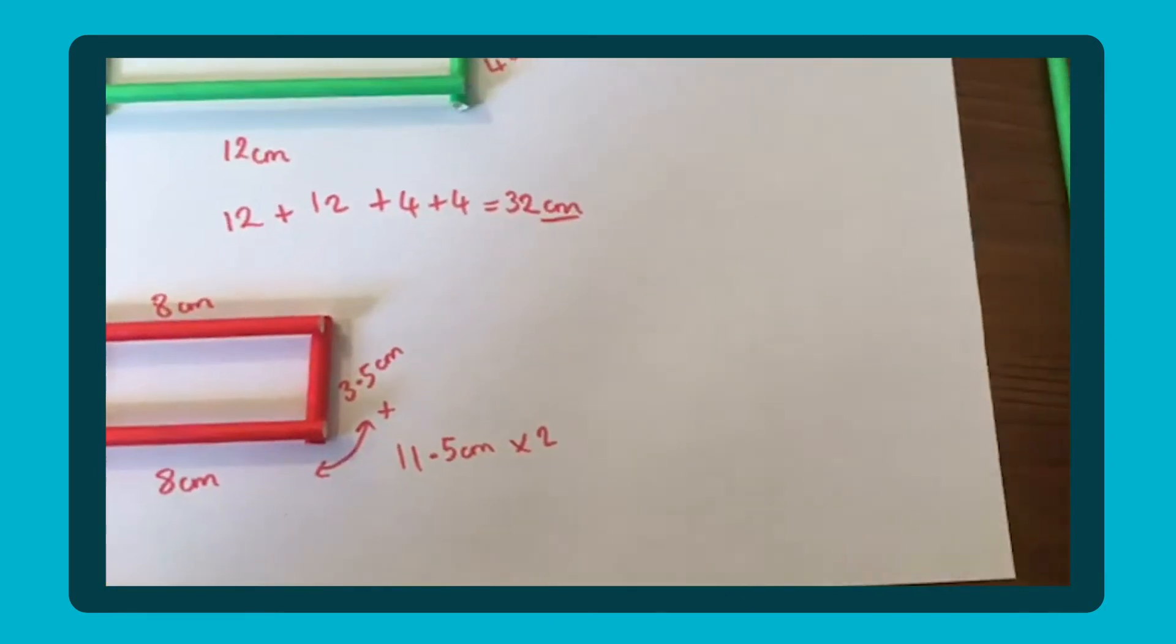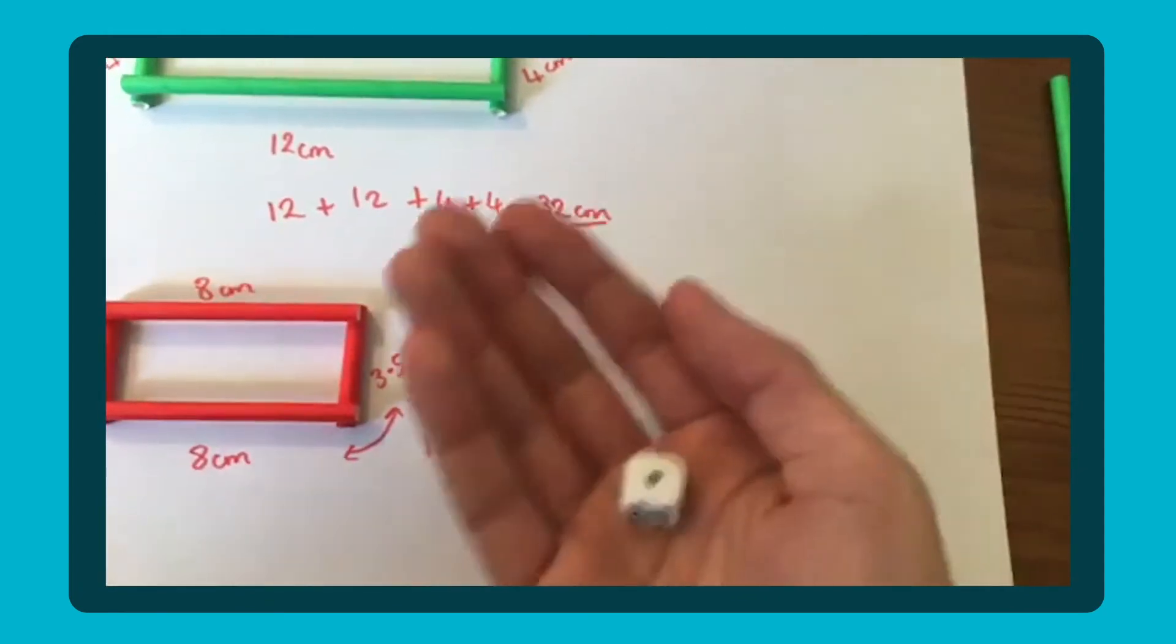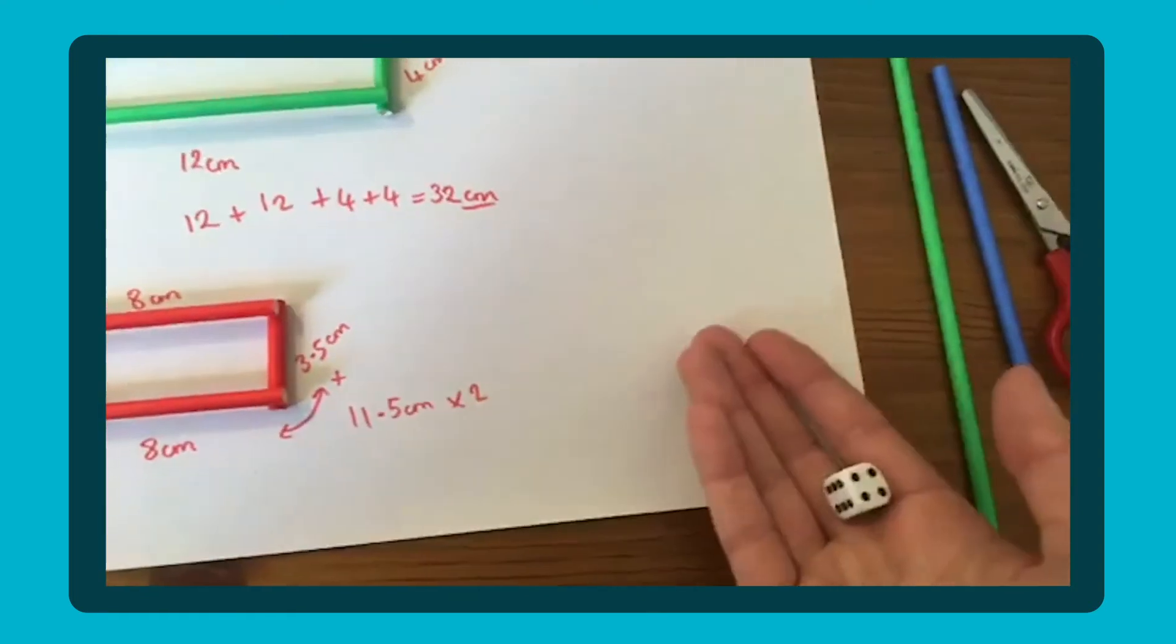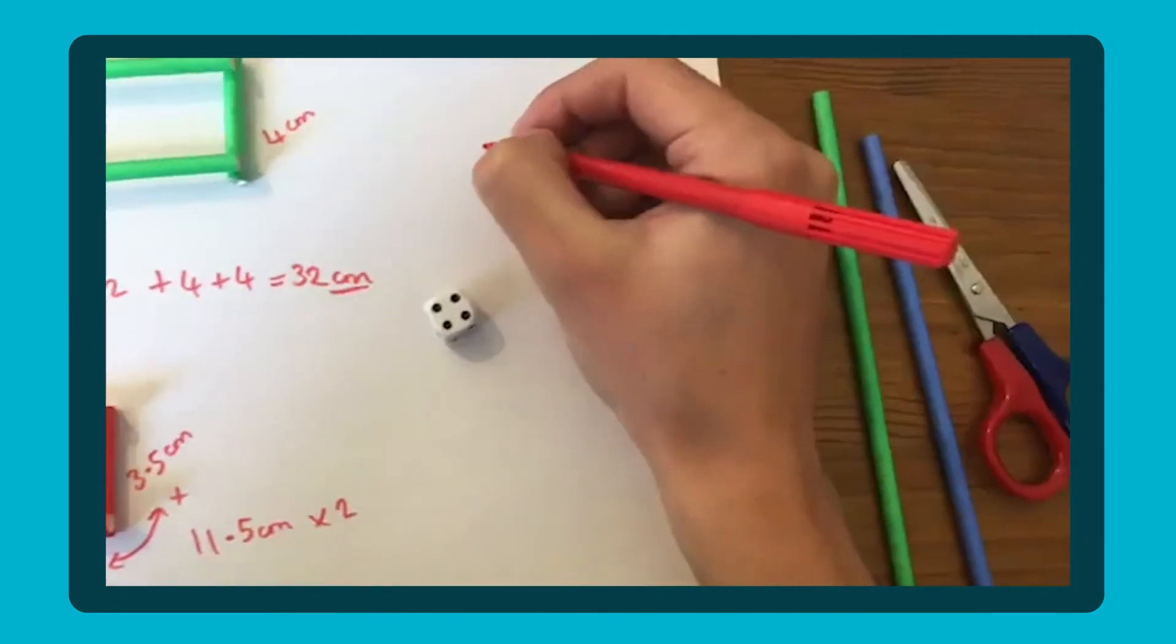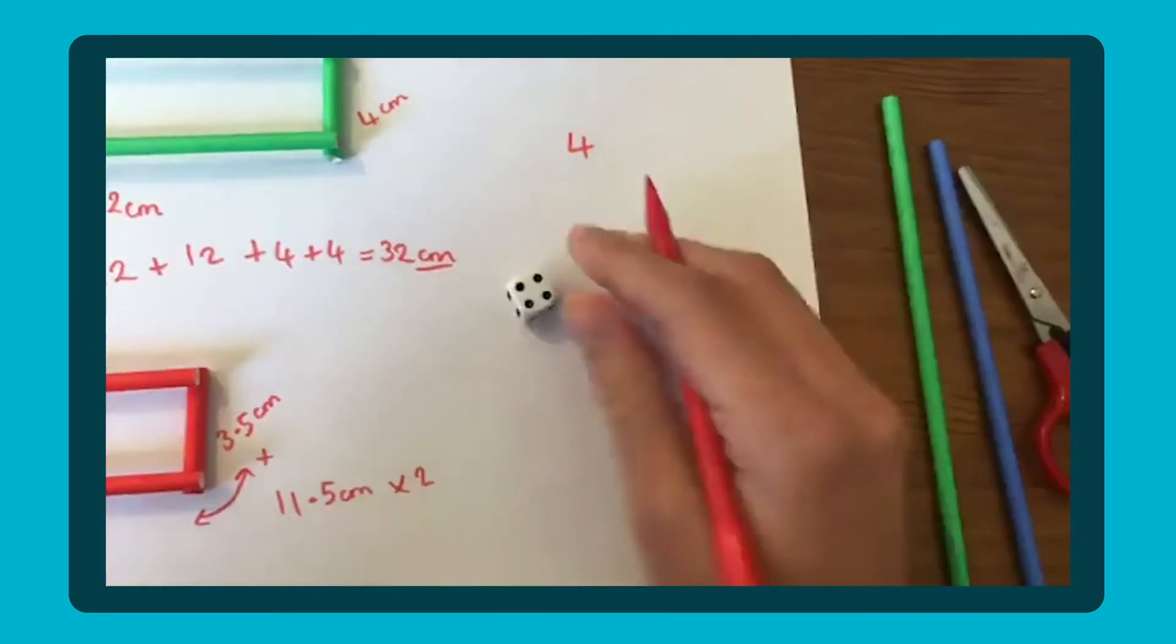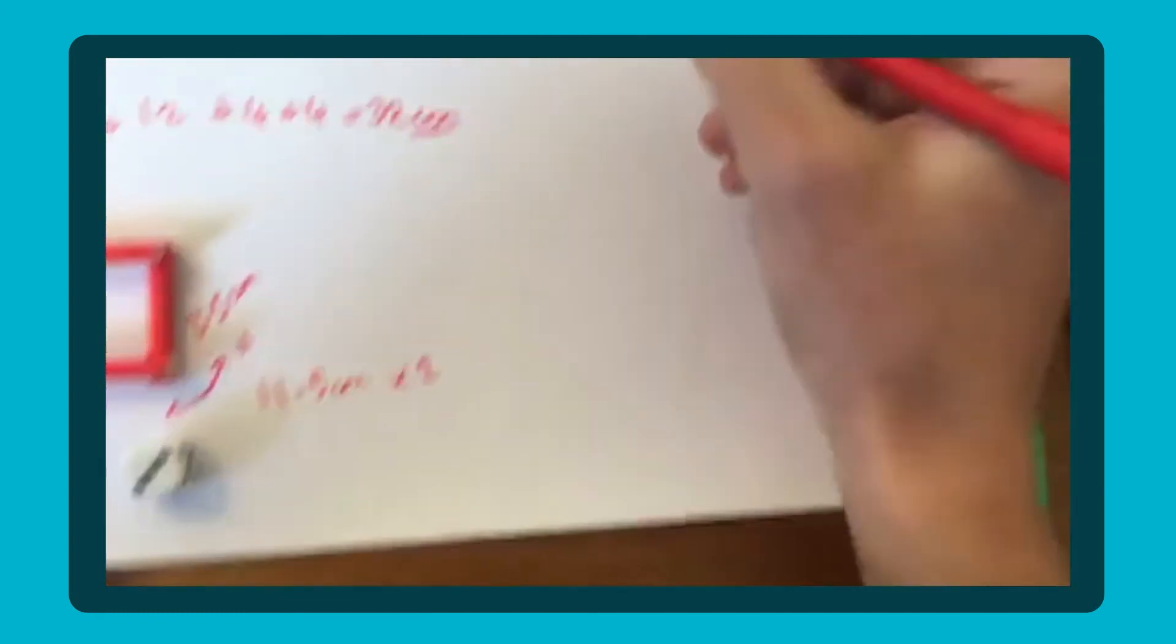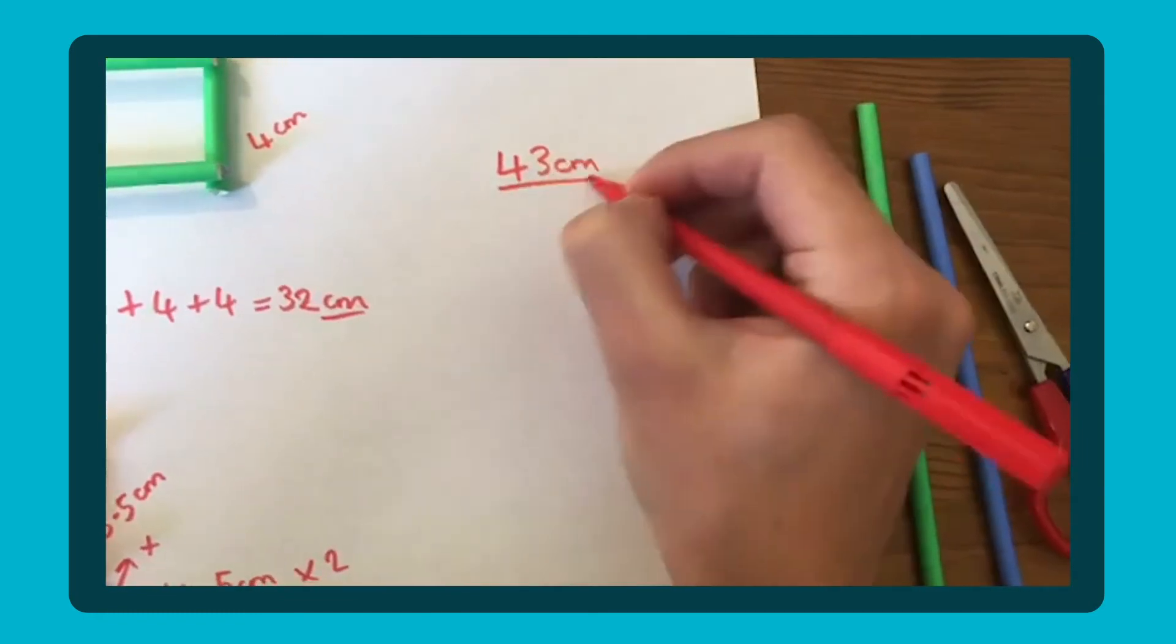The other thing you could do is generate a number with a dice or digit cards. And essentially, you're going to do this in reverse, finding the perimeter in reverse. So by rolling the dice, we've got a four. Put that up here. So I'm going to do two digits, two rolls. And I've got a three. So we've got a perimeter of 43 centimeters.